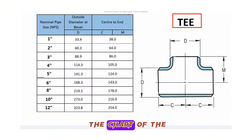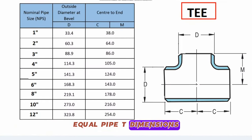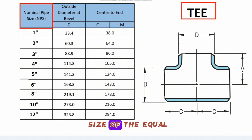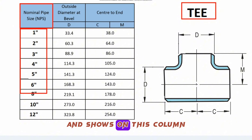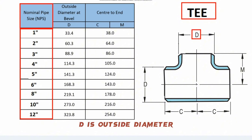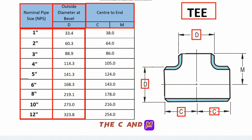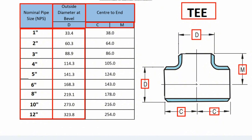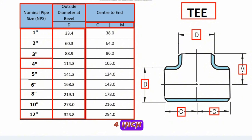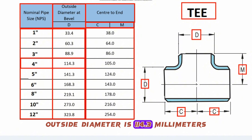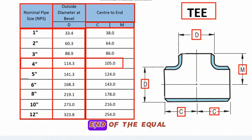Now let's look at the chart of the equal pipe tee dimensions. The NPS column shows nominal pipe size, the D column shows outside diameter, and the C and M columns show center to end of the equal pipe tee. For nominal pipe size 4-inch, the outside diameter is 114.3 millimeters, and the center to end of the equal pipe tee is 105 millimeters.